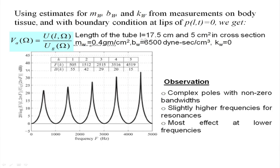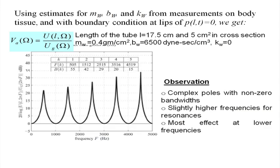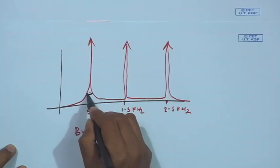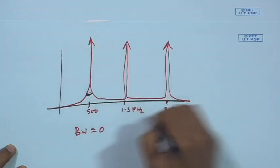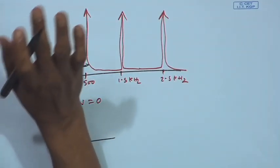If the length of the tube is 17.5 cm and the cross-sectional area is 5 cm², with M(ω) = 0.5 g/cm² and B(ω) = 659 — where M(ω) is mass per unit length, B(ω) is damping per unit length, and stiffness per unit length of the vocal tract wall — then it is found that the frequency response has complex poles with nonzero bandwidth instead of infinite energy at 500 Hz, 1.5 kHz, 2.5 kHz. In the lossless condition the bandwidth was zero.